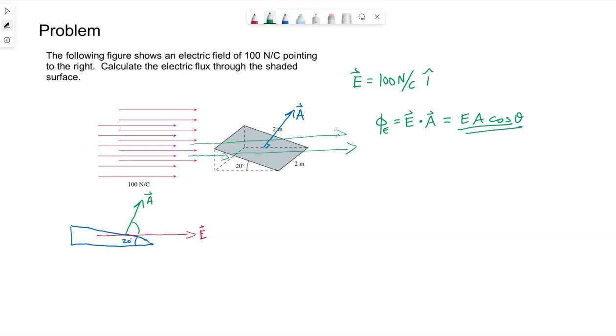So when we want to use EA cosine theta, theta must be the angle between the area vector and the electric field. We know the horizontal and the incline of the wedge is 20 degrees. So that would put 20 degrees down here between the electric field, which is horizontal, and that surface of the wedge. So the angle we want is actually 70 degrees.